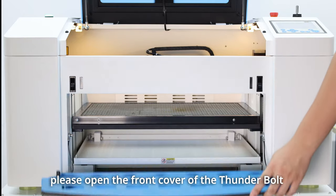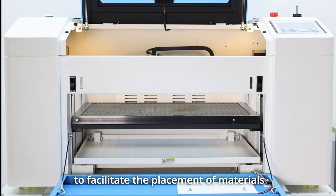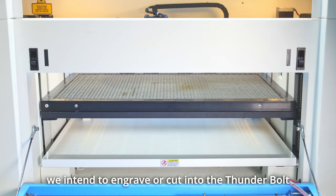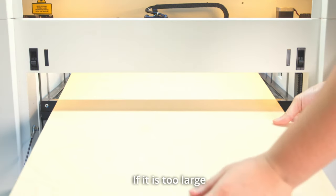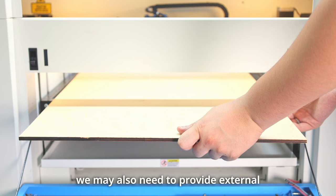First, please open the front cover of the Thunder Bolt to facilitate the placement of materials. Place the material we intend to engrave or cut into the Thunder Bolt. If it is too large, we may also need to provide external support to ensure the material remains stable.